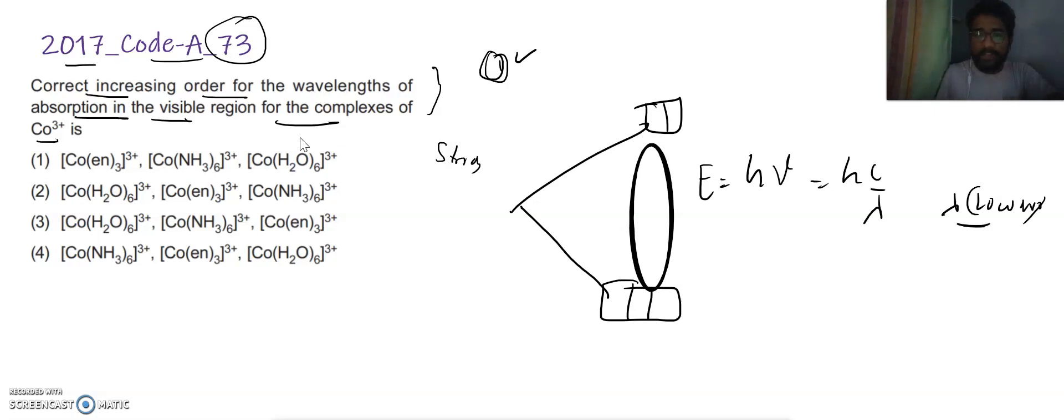Whenever we are having a strong ligand, the lambda will be least. And whenever we are having weak ligand, the lambda will be highest.